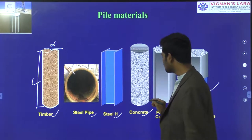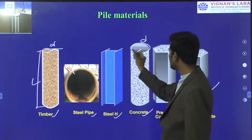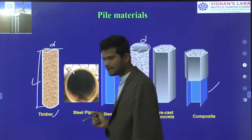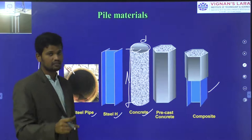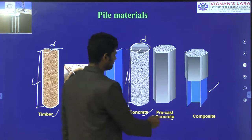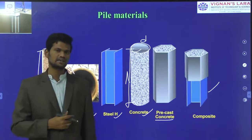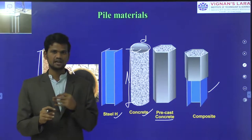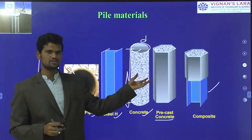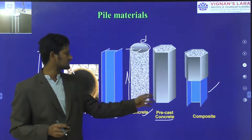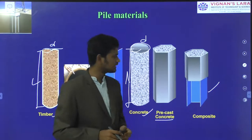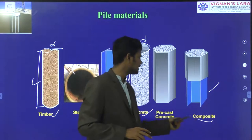Next, we are having the concrete pile. This is the diameter of the concrete pile and this is the length of the pile. By inserting this concrete pile into the underground soil, settlement may decrease and load carrying capacity will increase. These are the pre-cast concrete piles, which are cast at the casting yard based on the required load carrying capacity, then transferred to the site and inserted into the soil mass.